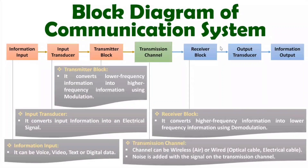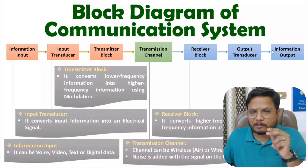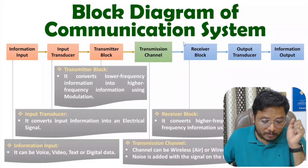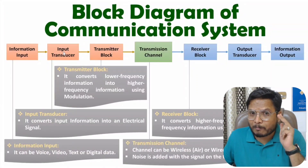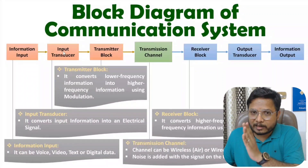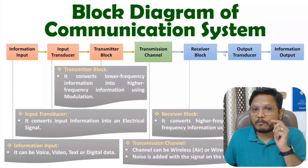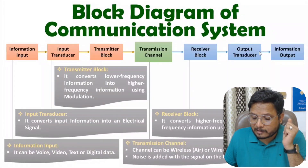Now we have an electrical signal with lower frequency information. If the information is already in electrical form, that will be the output information. But sometimes the information needed is a non-electrical quantity, so in that case we will have an output transducer that converts electrical information into non-electrical information. For example, with a voice signal, we used a microphone to convert voice into an electrical signal at the input. At the output, the electrical signal is given to a speaker, which converts the electrical signal back into voice.